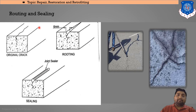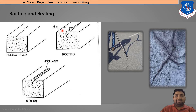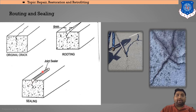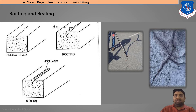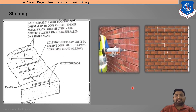Routing and sealing: for an existing crack, routing means making a groove — here a 6 mm groove is made — which is then filled by mortar or sealed using a joint sealer available in the market. The black portion visible in the example is the sealing provided in the cracks, applied via a pump.